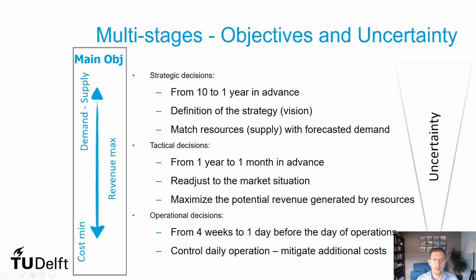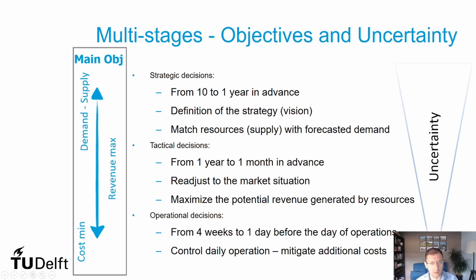In this slide, I summarize the planning framework by giving you information about the timelines and the main objectives at each decision level. For the strategic level, we are defining the strategy, or following our vision, when we define the fleet we want to have and the type of network we would like to operate in the future. This happens 10 to 1 year in advance before the day of operations. The goal there is to match the resources we are planning with demand, and demand is forecast because it's associated with a large amount of uncertainty — we are trying to predict what will happen in 5 or 10 years from now.